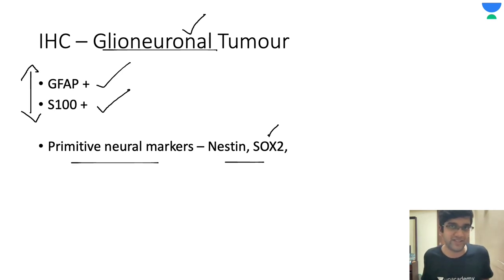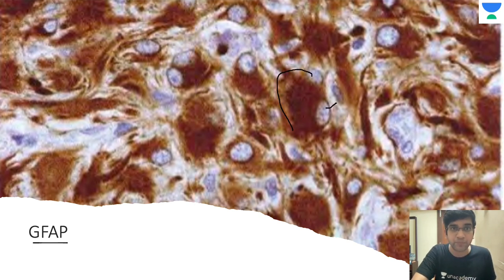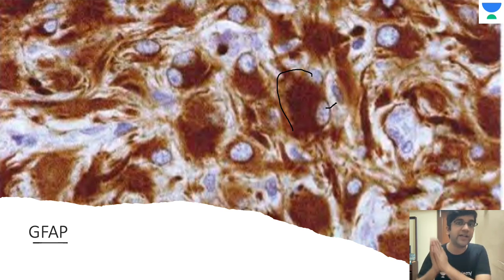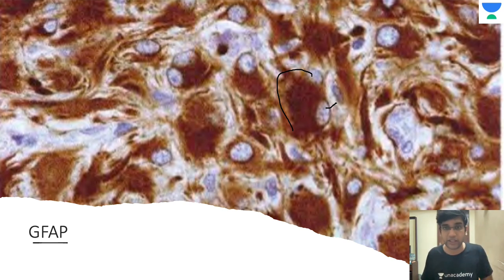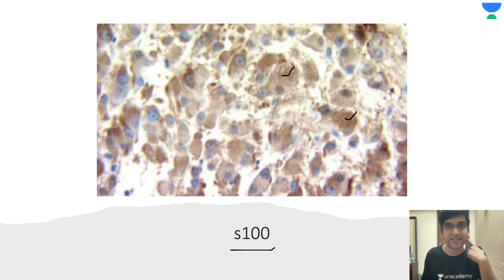My morphology plus GFAP and synaptophysin — definitely available in any Oncopath center — should be enough to call it subependymal giant cell astrocytoma. GFAP is a glial fibrillary acid protein and is a cytoplasmic marker. Whenever you are interpreting IHC, two golden rules: always have a control, and make sure if GFAP is a cytoplasmic marker, it should be positive only in the cytoplasm — if it's positive in the nucleus as well, be hesitant to call it GFAP positivity. S100 is also positive — even if it's a weak positivity, it's still cytoplasmic positivity. It's a stain positive in both neuronal and glial tumors, which proves the glioneuronal origin of SEGA.